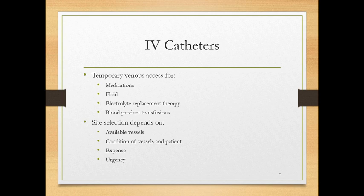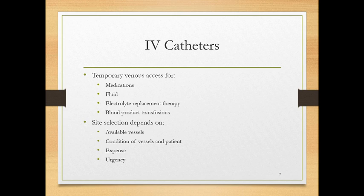Arteries are under pressure and much more difficult to keep from bleeding if punctured, so we prefer the vein. We place a catheter to have access for medications, fluids, electrolyte replacement, or blood products. The placement site depends on which vessels are available, whether they're in good shape, and the patient's condition — we may have to choose one leg over another. Also considered is the expense of placing catheters and how quickly we need to get it in.